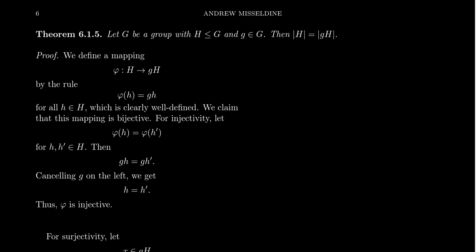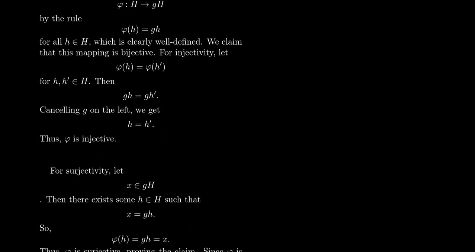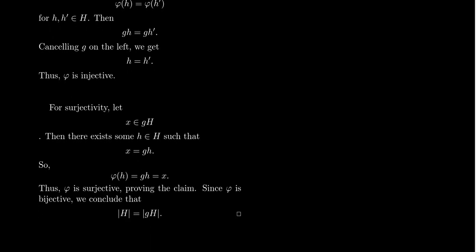Notice that to get injectivity, we just need that cancellation. So this argument is actually applicable for any quasi-group — a binary operation that has the cancellation property. We don't necessarily need associativity or inverses; we just need cancellation to show that left or right translation is injective. Why is it surjective? To show surjectivity, suppose we have an arbitrary element x of the co-domain. If x is inside the left coset gH, that means there's some element little h so that x equals g times little h. Then φ(h) equals gh, which equals x. So that shows surjectivity.